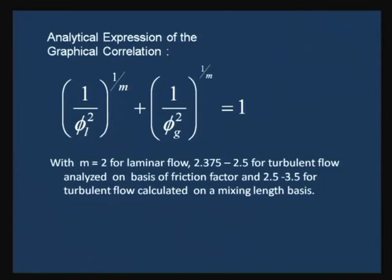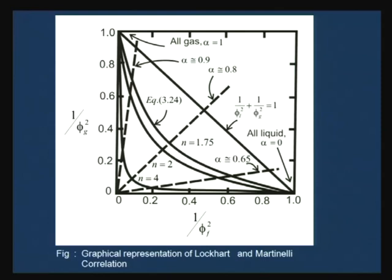The problem with this correlation is that both φ_l² and φ_g² contain the two-phase pressure gradient term — that is the unknown, the thing which you want to find out. In the graphical expression, both the x and y axes contain the unknown parameter. Naturally, if you want to find out the two-phase pressure gradient from here, you have to use a trial and error technique because both axes have the unknown pressure gradient term. In order to avoid this, we will be discussing other correlations in the present class.